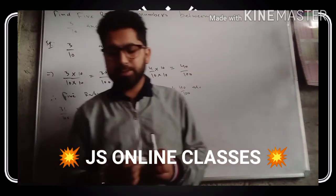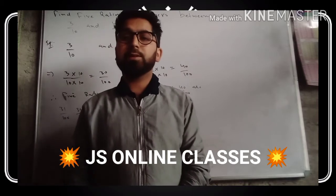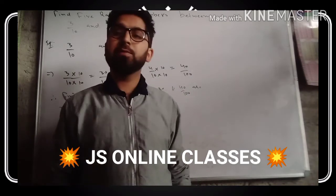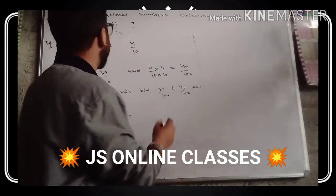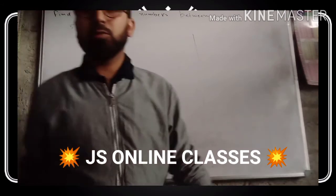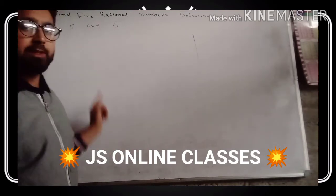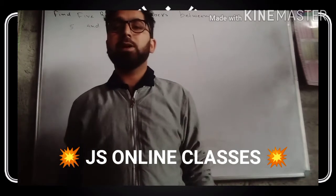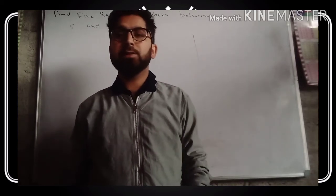I hope you have taken the screenshot and understood the questions carefully. I hope you will attempt and practice these questions. For homework, find five rational numbers between five and six. Please put your answer in the comment box. Also remember to subscribe to this channel and watch the videos to the end. Thank you for watching.